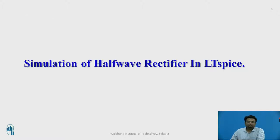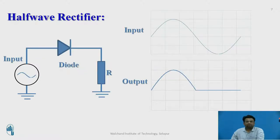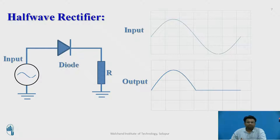Let us see the simulation of a half-wave rectifier in LTSPICE software. The half-wave rectifier basically consists of a diode. The diode conducts only when its anode is connected to the positive terminal and its cathode is connected to the negative terminal. When you connect the anode to positive and cathode to negative, it will act as a closed switch, and thus the input present at the diode will appear at the output.